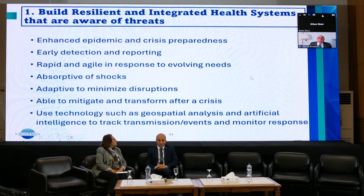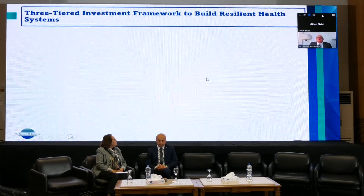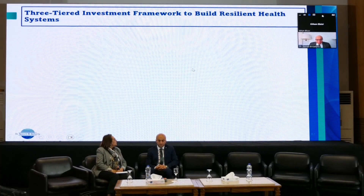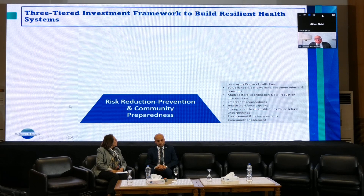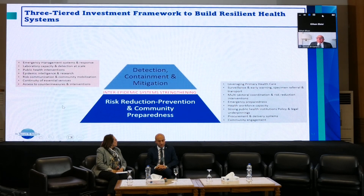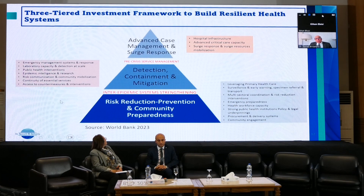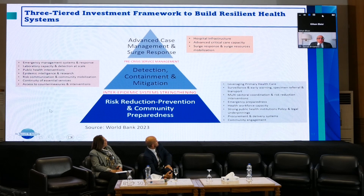A three-tiered investment framework is needed to build such resilient health systems. The base of the pyramid is risk reduction, prevention, and community preparedness — the foundation. The second tier is detection, containment, and mitigation. The third level is advanced case management and surge response. Each tier has specific actions, and the World Bank has produced a document explaining exactly how this can be done with country examples.